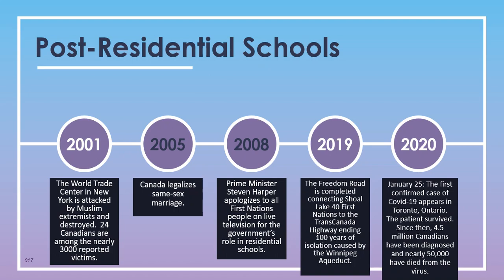Into the post-residential school era: in 2001, the World Trade Center in New York was attacked by Muslim extremists and destroyed, and 24 Canadians were among the nearly 3,000 reported victims. In 2005, Canada legalized same-sex marriage. In 2008 — 20 years after the last residential school closed — Prime Minister Stephen Harper apologized on behalf of the government to all First Nations people on live television for the government's role in residential schools. In 2019, the Freedom Road was completed, connecting Shoal Lake 40 First Nations to the Trans-Canada Highway and ending a hundred years of isolation as a result of the Winnipeg Aqueduct project.